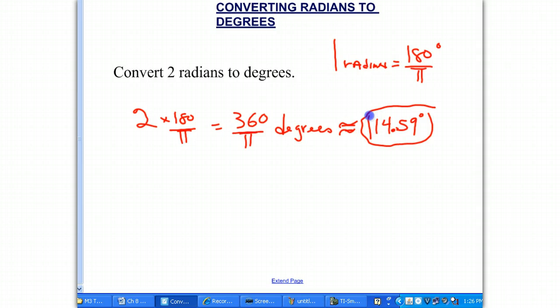Notice the method, though. We simply multiply 2 by 180 over π. Because, coming back to here, 1 radian is equal to 180 over π degrees.